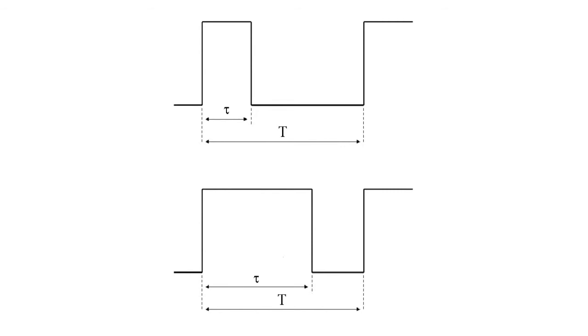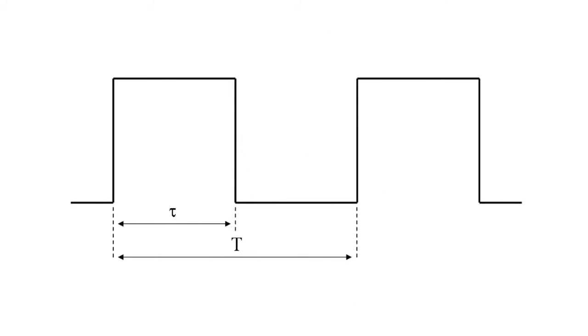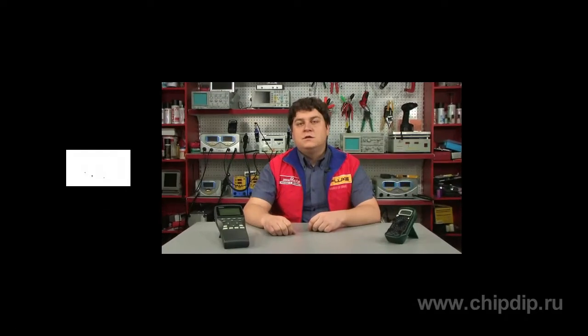If the pulse duration is equal to half of the pulse period, the corresponding pulse ratio is 2. This signal is called meander. Durations of the pulse and the pause in the period of such signal are equal.